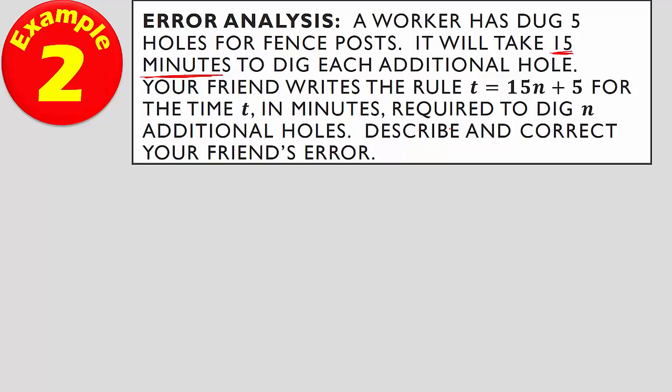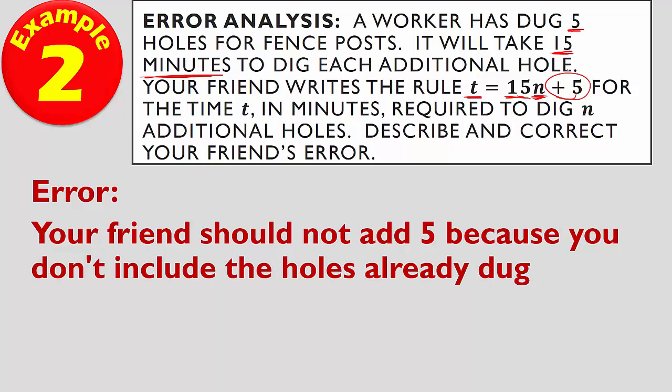First things first, T is the time in minutes, total time in minutes it's going to take to finish the job. It's going to take 15 minutes to dig each additional hole, so that's where we get the 15, and n is the number of holes. Your friend added 5 to it. I get where you get it, it says that he dug five holes. But this is going to be T, which is time in minutes, so this doesn't refer to any kind of amount of time. This refers to holes dug, and how many were already dug doesn't make a difference. The error was your friend should not add 5 because you don't include the holes that you've already dug. The correction would be T equals 15n.